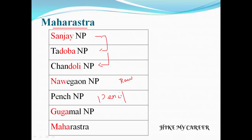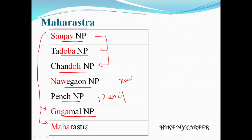Let's read the national parks for Maharashtra state. The parks are: Sanjay National Park, Tadaba National Park, Chandoli National Park, Navgwan National Park, Pench National Park, and Gugamal National Park. These are the parks for Maharashtra state. The story: Sanjay likes Dora and Kaliya in cartoon channel — he draws the picture using a raw pencil and presents the gift to his guru, guru name is Magan. Friends, please watch at least twice. Thank you for watching — please share the video and subscribe to my channel.